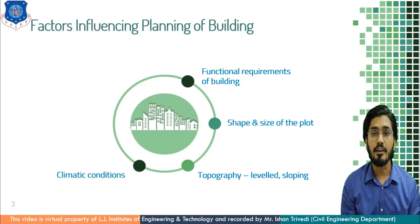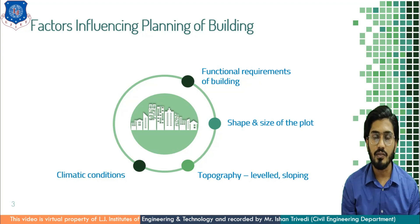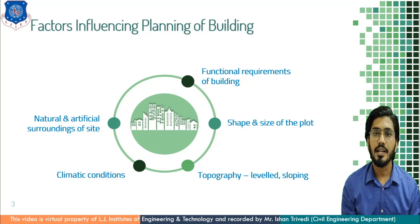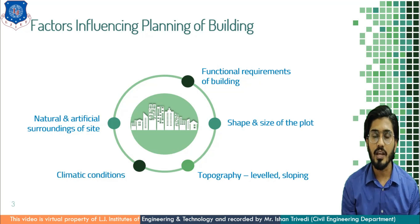Next is climatic condition. Each and every building design is based on the climatic condition. Based on climatic condition, the orientation of a building is determined and various aspects and features are introduced so that we can have advantage of sun and wind and eliminate heat at certain points. Next is natural and artificial surroundings of a site. Based on the natural surroundings, the beneficiary aspects of a building can be achieved — for example, cliff area, seashore area, facing towards a river bank, ocean, or hilly area — so that you can enhance and achieve the surrounding beauty.